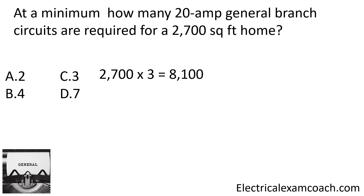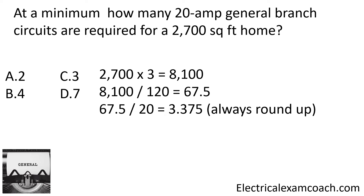Because this is our general lighting, those are all going to be 120-volt circuits. So we take that 8,100 and divide it by 120 volts, which gives us 67.5 amps — we're converting it over to amps. Then we take that and divide it by whatever size branch circuit we're installing. In this case, they want to run 20 amp circuits. We take our 67.5 divided by 20, which gives us 3.375 circuits. We're always going to round up because you can't have a piece of a circuit, so the correct answer would be four for this home.